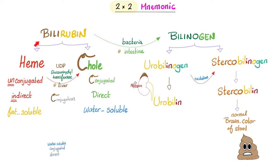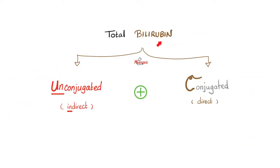Tell me about bilirubin. Bilirubin could be unconjugated or conjugated — heme bilirubin or chole bilirubin — bilirubin in the blood or bilirubin from the liver — lipid-soluble or water-soluble — indirect Van den Bergh test versus direct Van den Bergh test. The conjugation in the liver converts it from one form to the other. The total bilirubin is the sum of both unconjugated and conjugated. Whenever there is elevated conjugated bilirubin, there will also be elevated bile salts, because the liver made both.